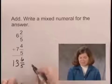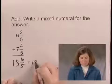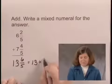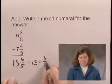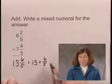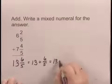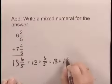13 and 6 fifths is the same as 13 plus 6 fifths. 6 fifths we can write as 1 and 1 fifth.